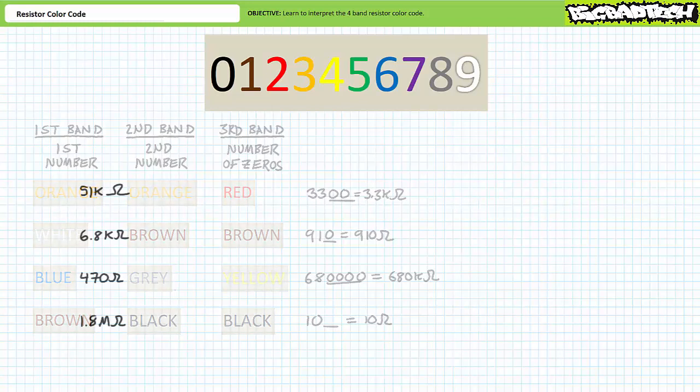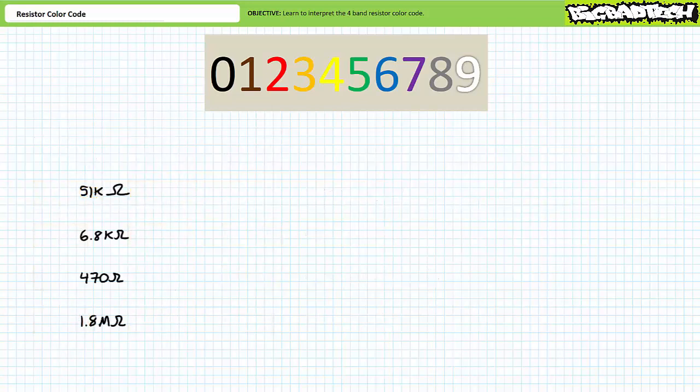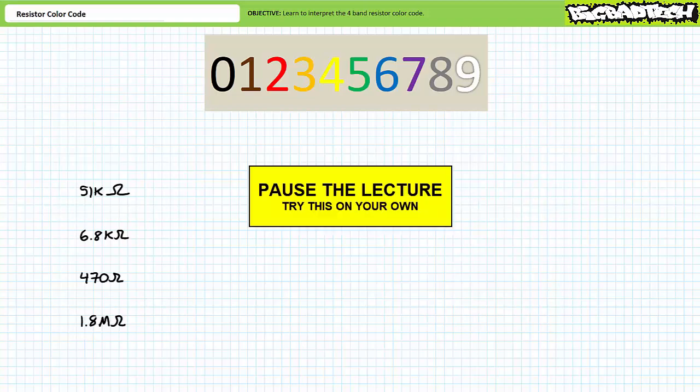Let's try this in reverse. See if you can determine the color code of the first three bands of the four-band resistor color code for this selection of resistors. 51 kilohms, 6.8 kilohms, 470 ohms, and finally, 1.8 megaohms. By all means, pause the lecture and try this on your own. If you're tracking, you should have obtained the following results.